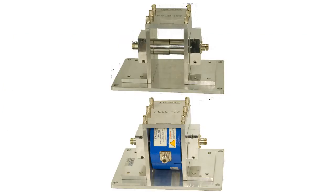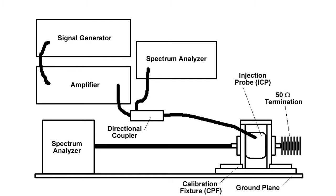Now let us see how we can perform the bulk current injection test on various devices. First, we will perform the calibration method with calibration fixture and equipment. The calibration fixture, used in both methods, is shown in figure. During the calibration procedure, same for both methods, the injection probe is mounted inside the calibration fixture. The calibration fixture is terminated by a 50 ohm load at one terminal and connected to the spectrum analyzer through an attenuator, to protect the measuring equipment, at the other terminal, as shown in figure. During the calibration procedure, we need to measure forward power supplied to the injection probe, mounted in the calibration fixture, and the power reflected from it, reverse power. This is accomplished with the help of a directional coupler, shown in figure. The coupler is rated for specific power handling, frequency range, and attenuation.